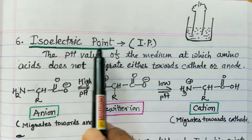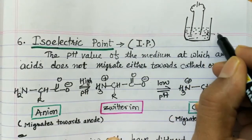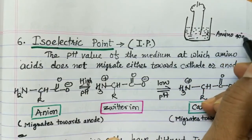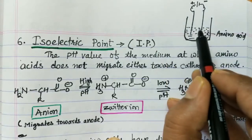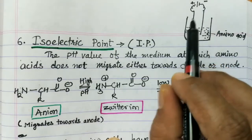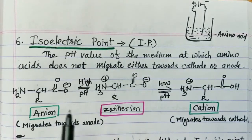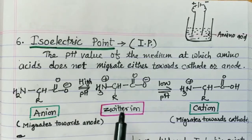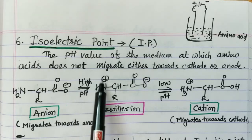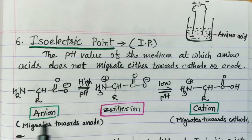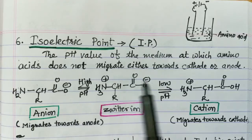The next property is the isoelectric point. If an amino acid solution is placed in an electric field, depending on the pH of the solution, the amino acid will migrate either towards the cathode or anode. At very high pH (basic solution), the zwitterionic form exists as an anionic form — the base abstracts the proton — and the negatively charged anion migrates towards the anode.